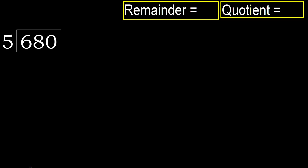680 divided by 5. 6 is not less, therefore with 6. 5 multiplied by which number is nearest to 6, but not greater? 5 multiplied by 2 is 10 — 10 is greater. 5 multiplied by 1 is 5 — it is not greater. Subtract: 6 minus 5 is 1.